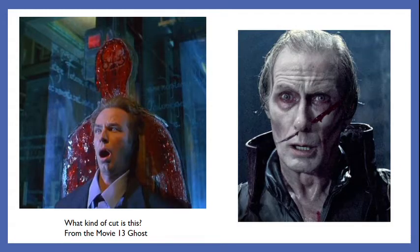Ready for a little practice? What kind of cut is this on the left? It's from the movie Thirteen Ghosts — a piece of glass has come down and cut right through this man. Do you recognize the plane? It's the coronal or frontal plane — it has separated him into a front and a back. What about on the right? This one's actually a little tricky, but it's pretty much a transverse plane, just a little angled, because it is separating him into a top and a bottom.